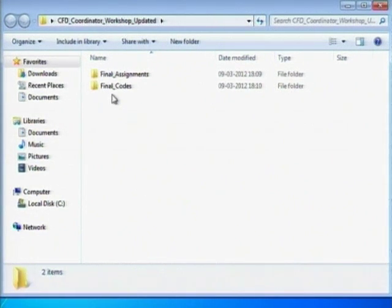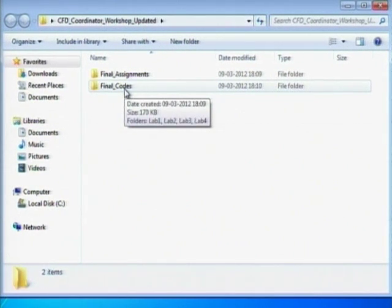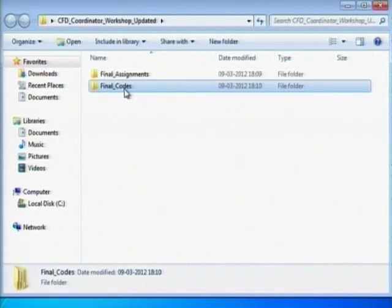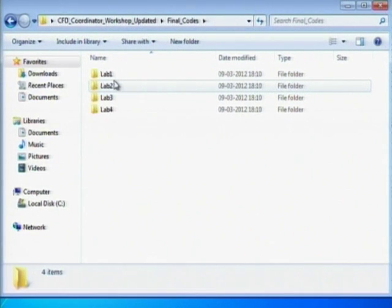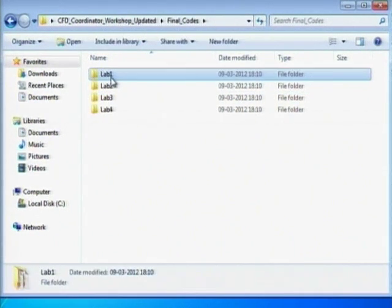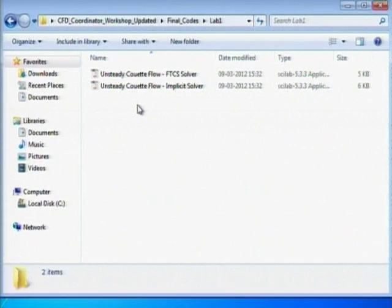Okay, there's a folder on your desktop that contains two folders. The first one is the assignment with the problem statements. The second one is the Scilab codes, so I'll go to the Scilab codes first. Lab 1 is today's lab session. Within Lab 1, you have two Scilab files: the first one is the explicit FTCS solver, the second one is the implicit solver.